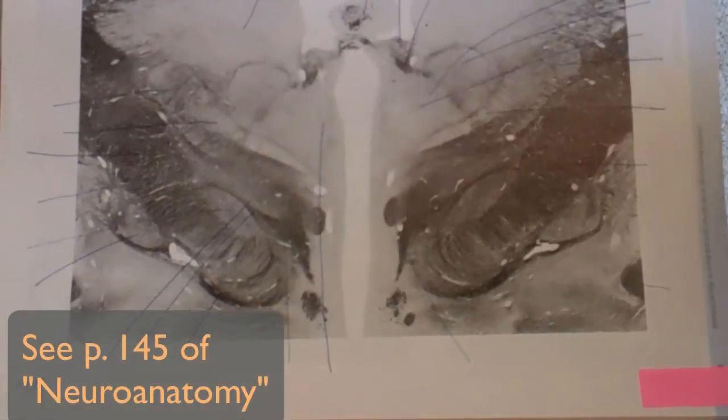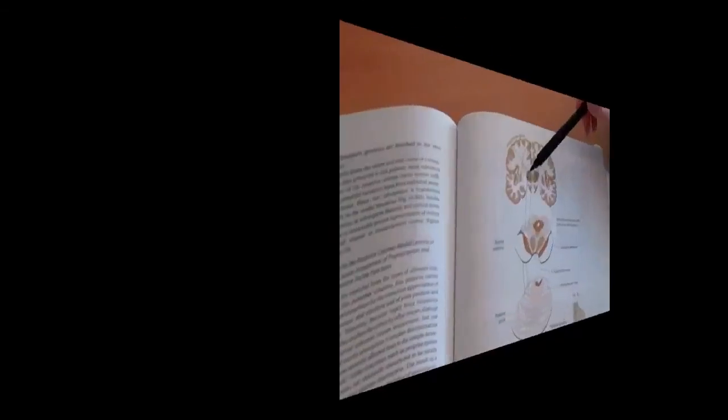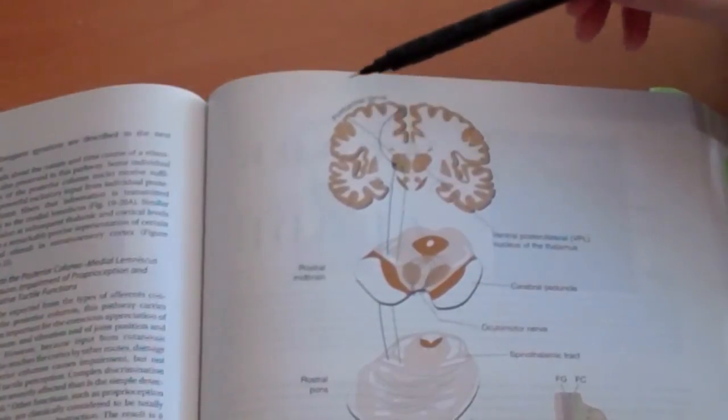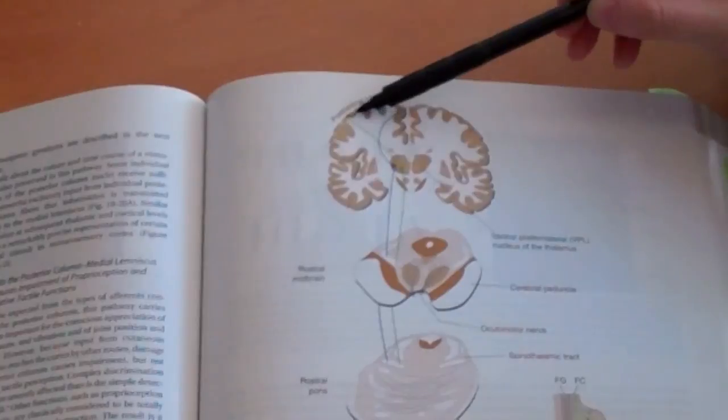As we said, the fibers from the dorsal column medial lemniscus pathway end up in the ventral post-lateral nucleus of the thalamus. Here we are looking at a section through the thalamus. You can find the fibers from the medial lemniscus ending up in the ventral post-lateral nucleus of the thalamus, which is right here. From the thalamus, the new axons then go through the corona radiata and end up in the post-central gyrus.